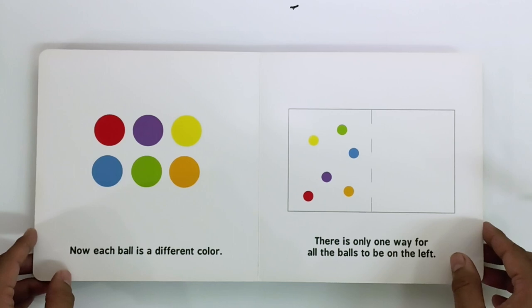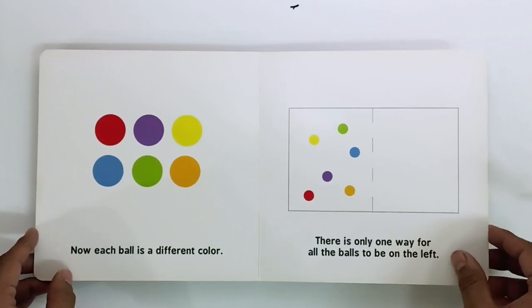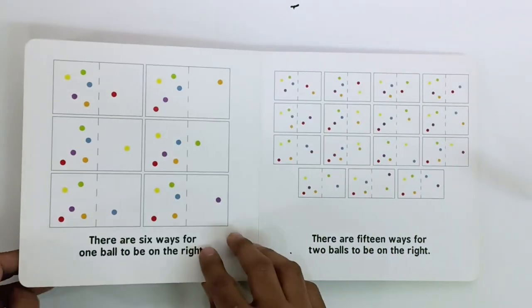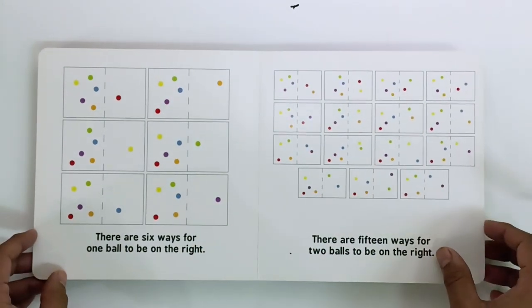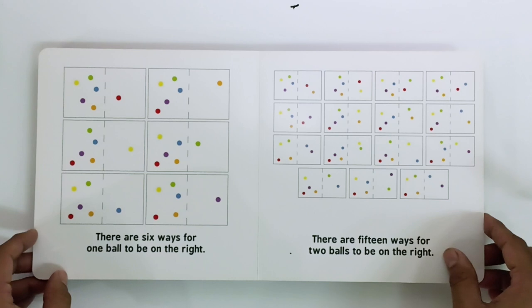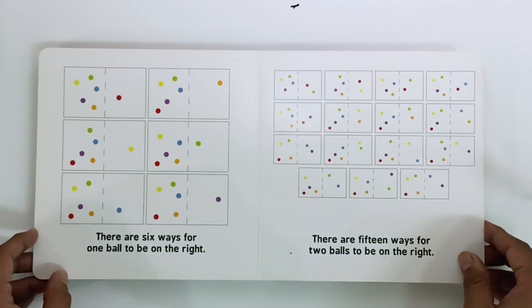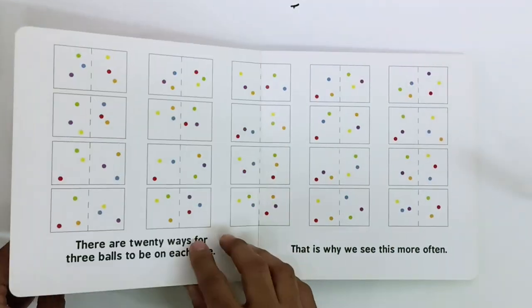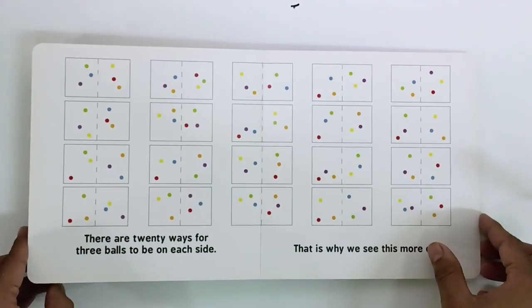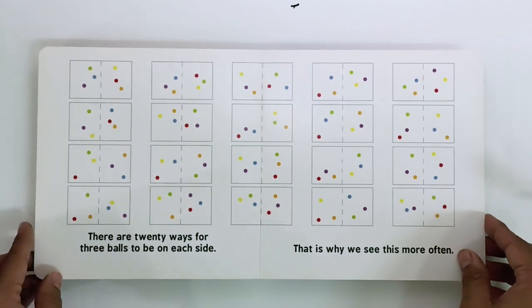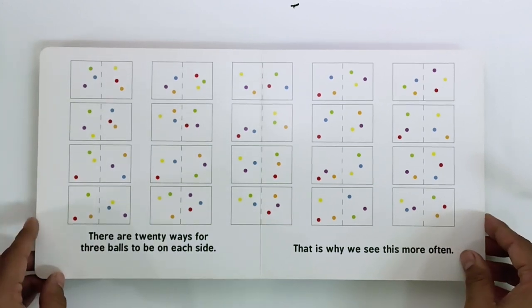There are 15 ways for all the balls to be on the left. There are six ways for one ball to be on the right. There are 15 ways for two balls to be on the right. There are 20 ways for three balls to be on each side. That is why we see this more often.